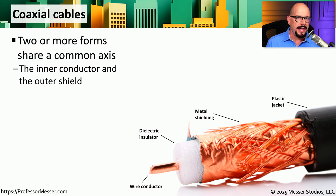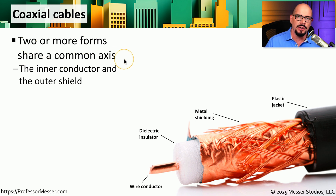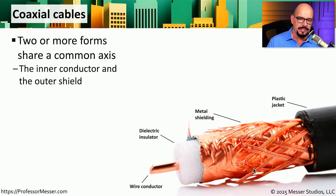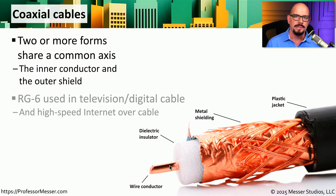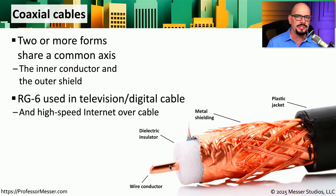Twisted pair cable is not the only type of copper cable you might find. Another common copper type is coaxial cable — coaxial meaning two or more forms sharing a common axis. There is an inner conductor where all of the signal travels, and an outer shield that protects those signals. For networking, we commonly see coax associated with cable modems or digital cable. Anytime you're running high-speed internet over cable infrastructure, you're probably using a coaxial cable.